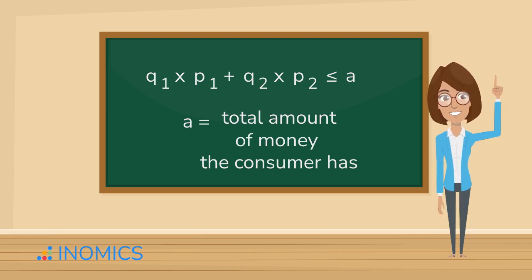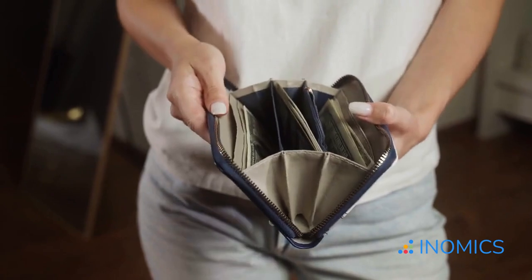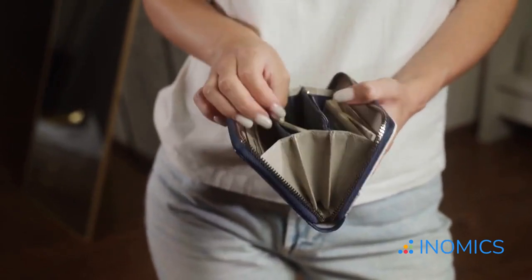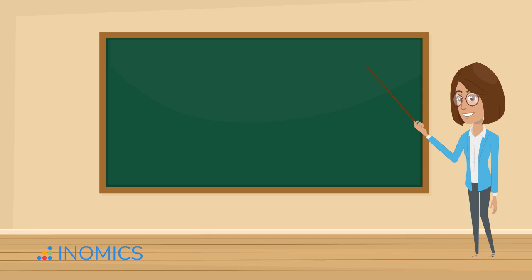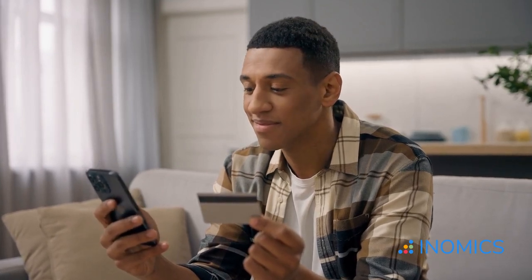Now, here's the key assumption. Economics typically assumes that the budget is binding, meaning the consumer spends all their money. So, we write, Q1 multiplied by P1 plus Q2 multiplied by P2 equal to A. That makes sense, right? If you're trying to maximize your satisfaction, you wouldn't leave money unspent.